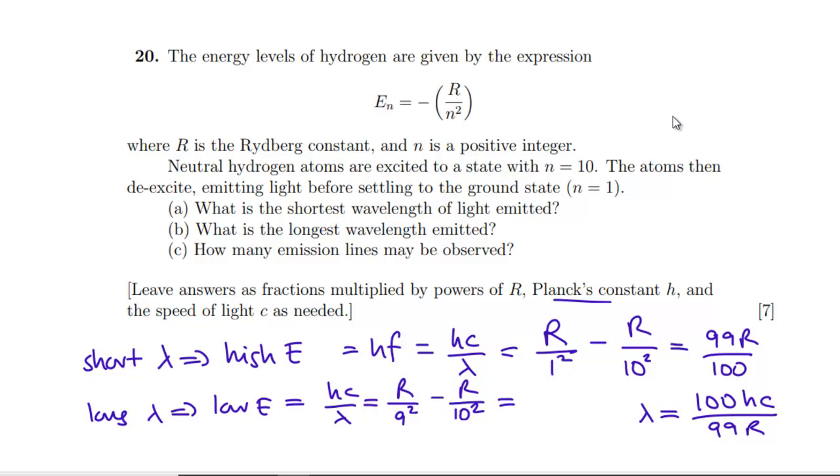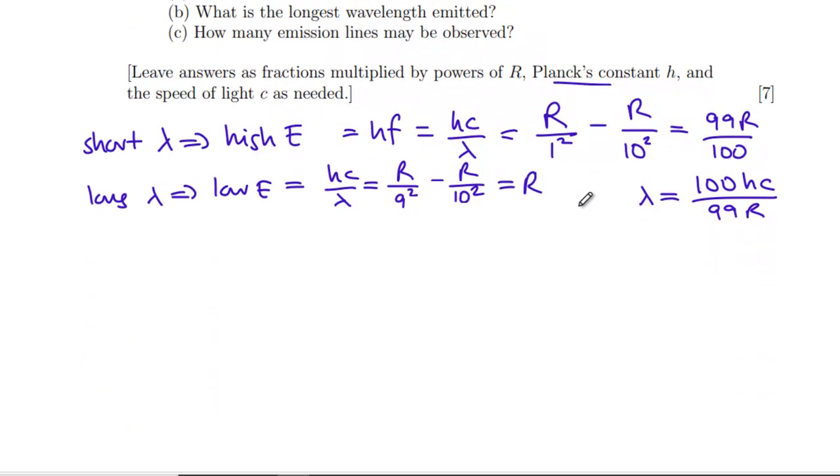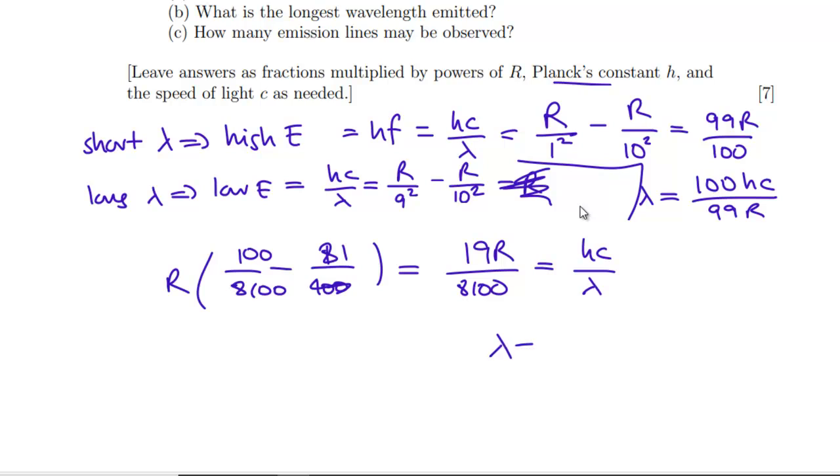Let's not rush that. I was thinking that might be cancelling numbers. I'm not going to be able to cancel. So we've got R times, I need more space. So we're going to have R, 1 over 81 minus 1 over 100. So that's going to be, we'll put it all over that. So we're going to have 100 minus 81. So we've got 19 over 8,100 R. That is our HC over lambda. So now our lambda is equal to 8,100 HC over 19 R. So it's certainly longer.